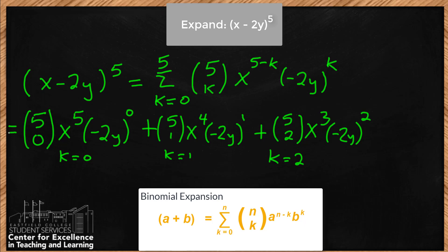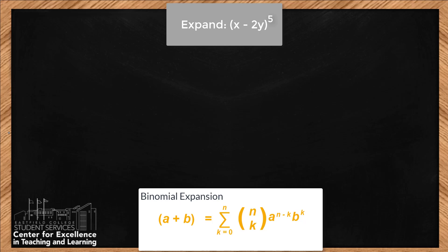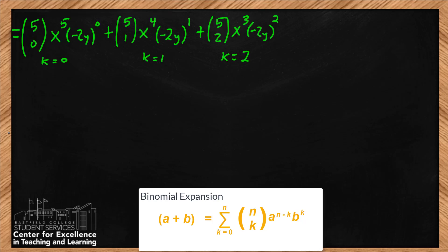We still have k=3, 4, and 5 to go. For k=3: it would be 5 choose 3. We're just increasing k every time. Notice now it's x squared because it's 5 minus 3, and negative 2y to the 3rd power. This is k=3.